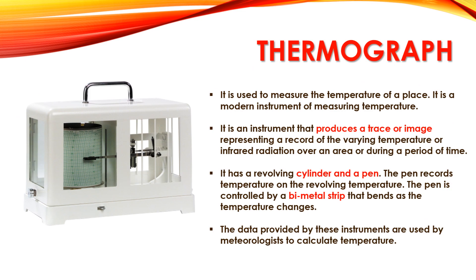The next instrument is the thermograph, which is used to measure the temperature of a place. It is a modern instrument that produces a trace or image representing a record of varying temperature or infrared radiation over an area or during a period of time. It has a revolving cylinder and a pen, as you can see on the screen. The pen records temperature on the revolving cylinder and is controlled by a bimetallic strip that bends as the temperature changes. The data provided by these instruments — thermograph, Six's maximum and minimum thermometer, and the other thermometers — are used by meteorologists to calculate temperature.